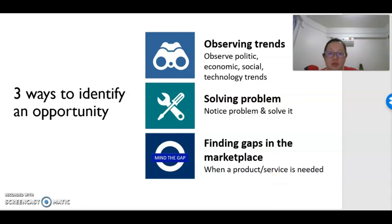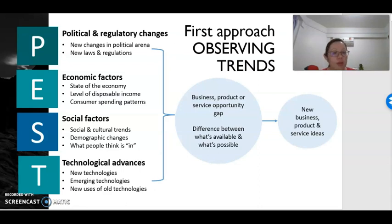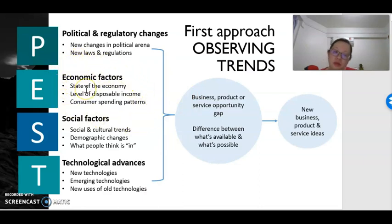When we look at the first approach — observing trends — you can observe trends in terms of political or regulation changes. Sometimes when there are changes in politics, new regulations such as new SOPs during the pandemic may create business opportunities for certain companies or businesses; for example, companies that provide cleaning services or certain types of products. Similarly, when the economy changes and consumers have better income during good economic conditions, consumers are willing to spend more on good quality, expensive products, which might create an opportunity for us to sell premium products.